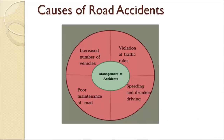The next section covers road, rail and air traffic accidents. For road accidents, increased number of vehicles on road, violation of traffic rules, speeding and drunken driving, and poor maintenance of roads are some aspects contributing to road accidents.